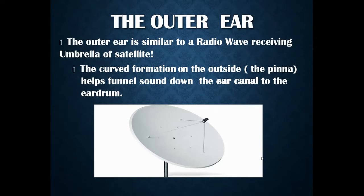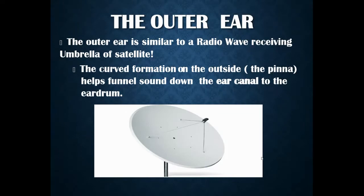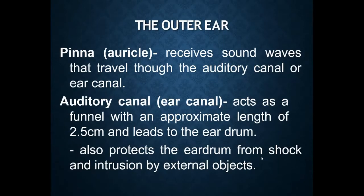The outer ear is similar to a radio wave receiving dish — like the dish TV umbrella fixed on rooftops. The curved formation on the outside is the pinna, which helps funnel sound into the ear canal. The pinna is the main area that receives sound waves, which then travel through the auditory canal. The auditory canal is a funnel about 2.5 centimeters in length that receives the sound waves.